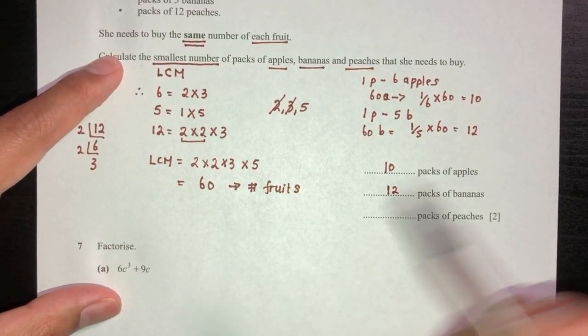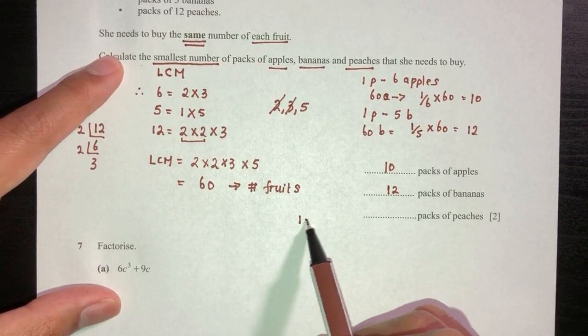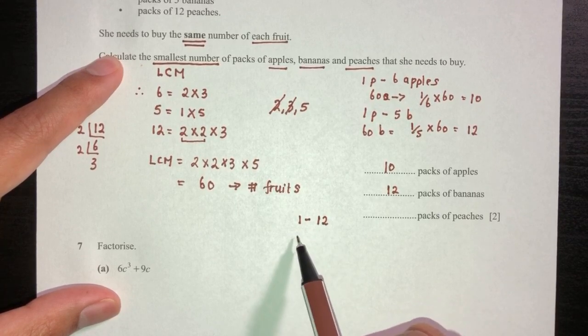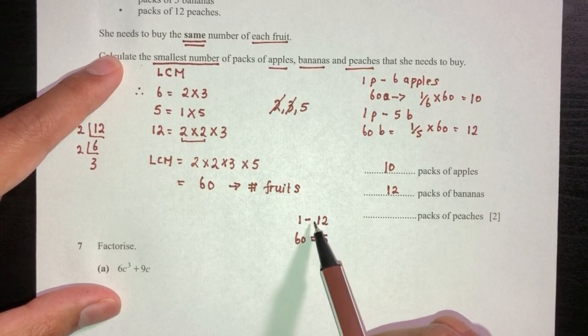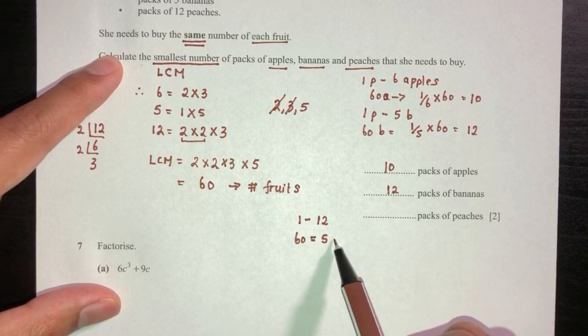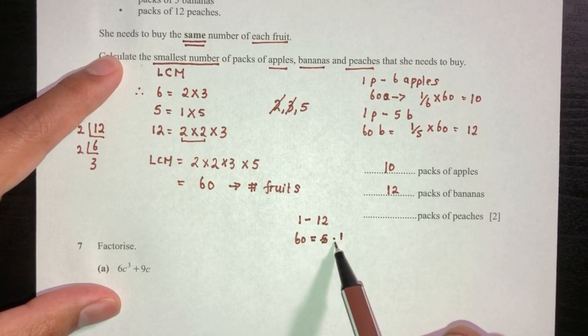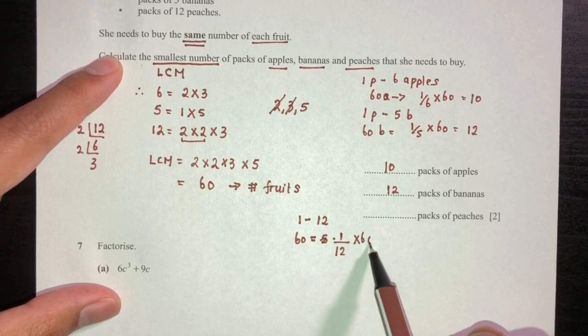And last one, same steps. So one pack of peach has twelve peaches. Now sixty peaches, that will be five, right? So one over twelve times sixty, that is five.